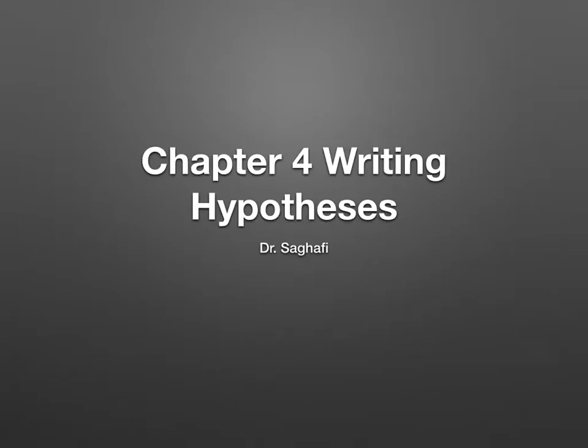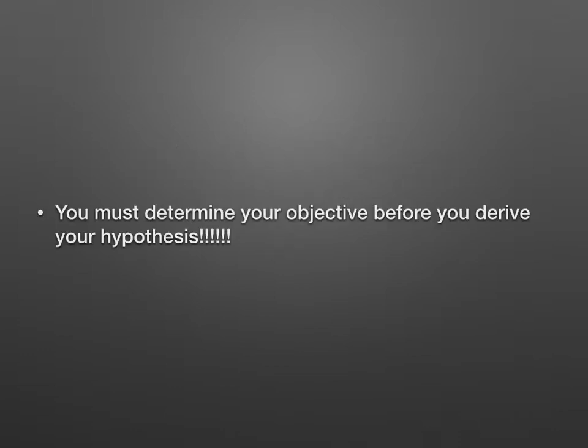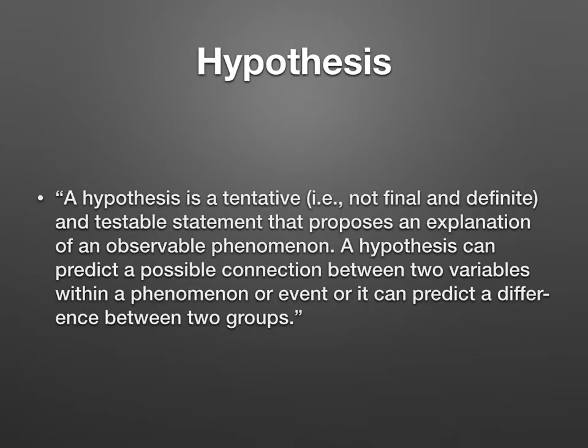Today we're going to talk about writing hypotheses. The first thing is you must determine your objective before you derive your hypothesis. As quoted in the book, a hypothesis is a tentative — not final and definite — and testable statement that proposes an explanation of an observable phenomenon. A hypothesis can predict a possible connection between two variables within a phenomenon or event, or it can predict a difference between two groups.